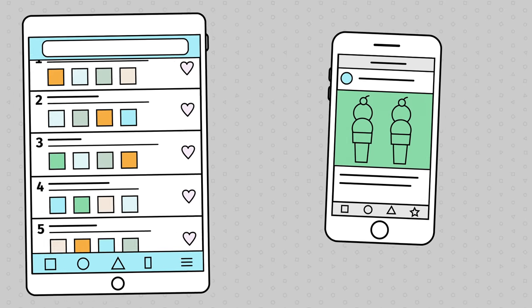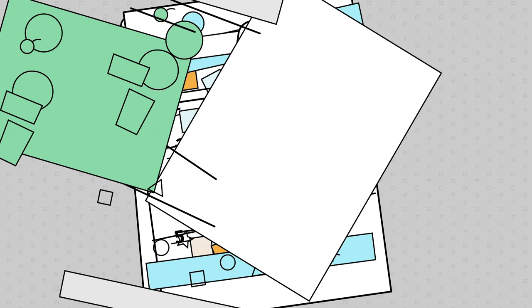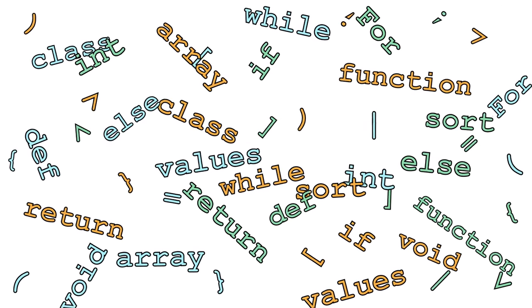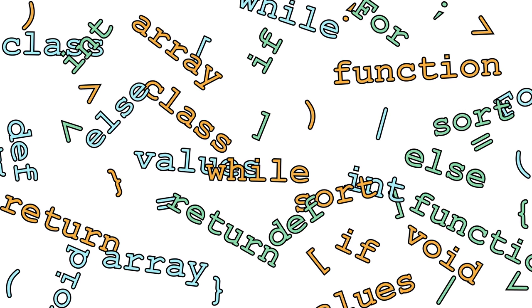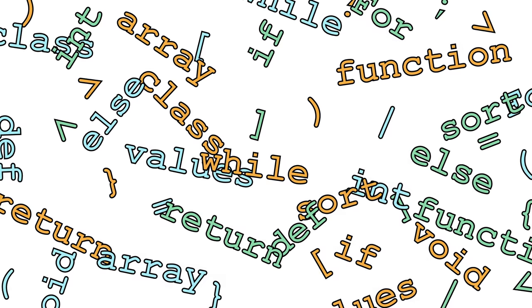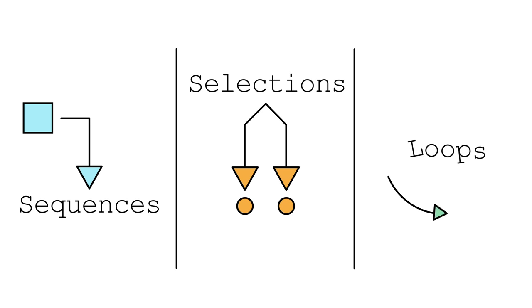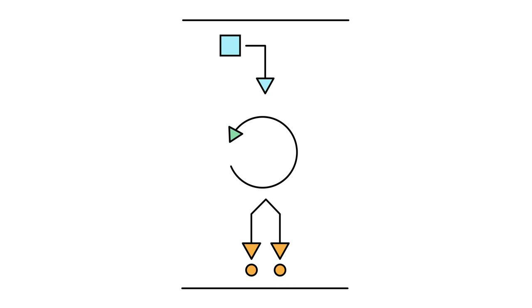Behind all of the software that we use on a daily basis, there's a code being run with all sorts of different terms and symbols. Surprisingly, it can often be broken down into three simple programming structures called sequences, selections, and loops.